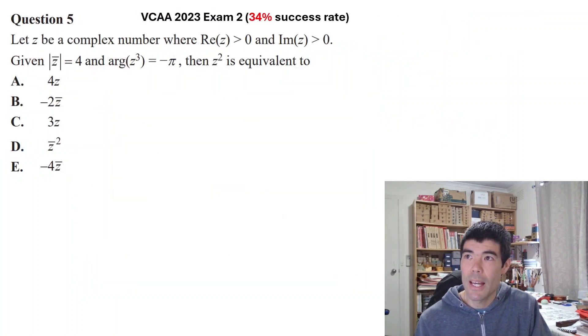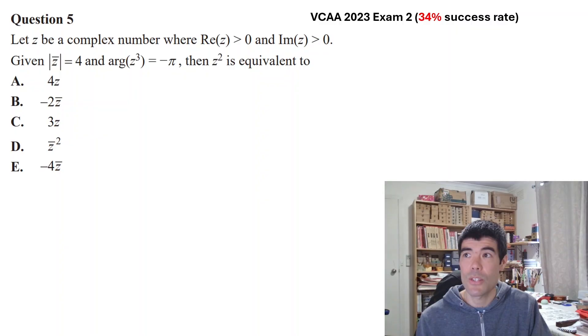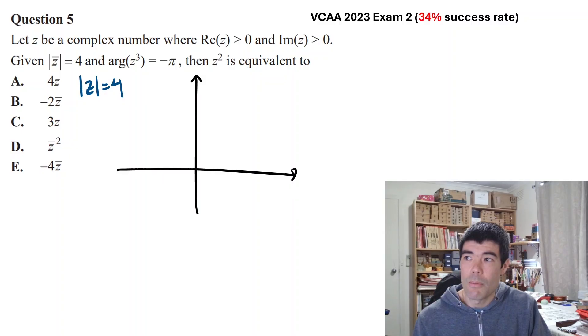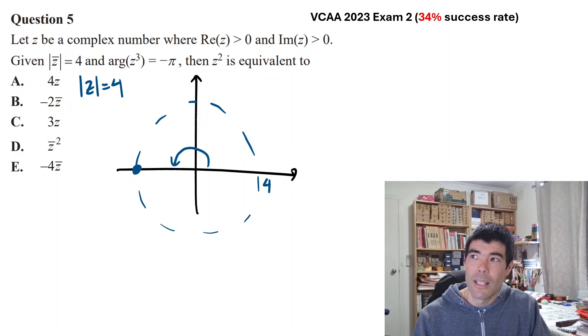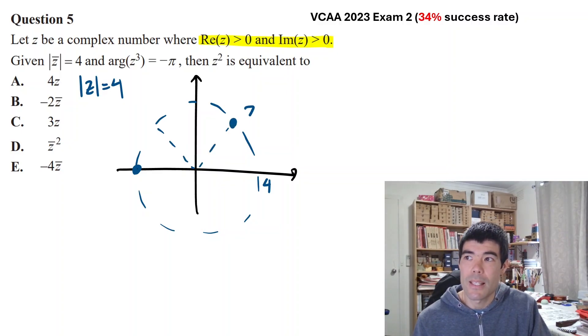This is the last one we'll look at from the 2023 exam 2, 34% success rate, so it's a more challenging question. We're given the length of z conjugate being 4, so that also tells us the length of z is 4. So if we can draw up a diagram on the circle of radius 4 centered at the origin, z must be somewhere on this circle. We also know the angle of z³ is -π, so -π is over here. If that is the cube of z, then z itself must be one third of the way along. We also know that it's in the first quadrant, so it must be here somewhere. Actually that gives us enough information to write z explicitly as 4cis(π/3).